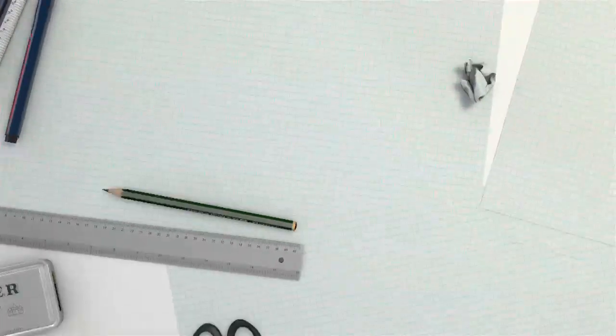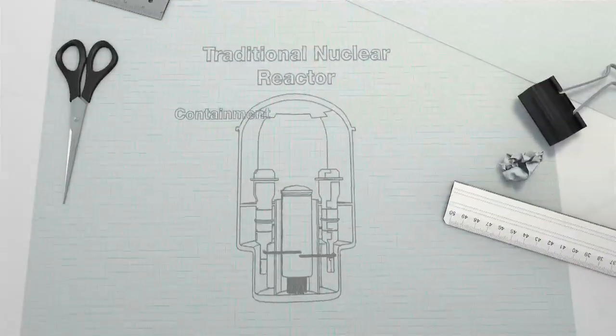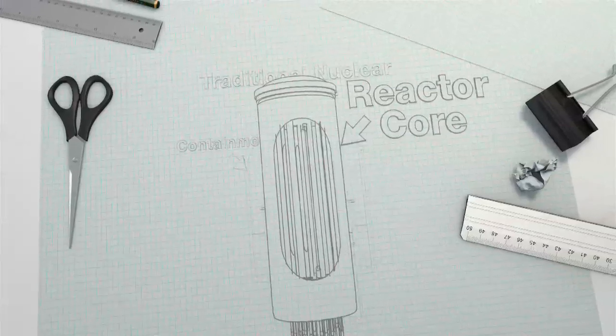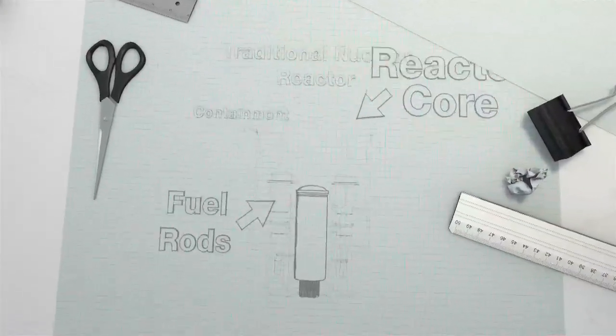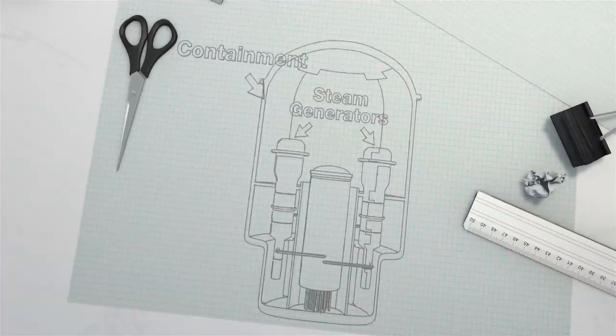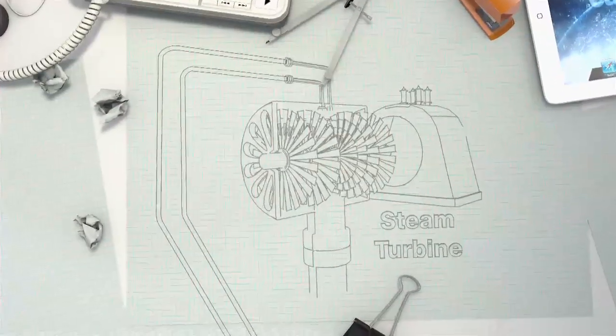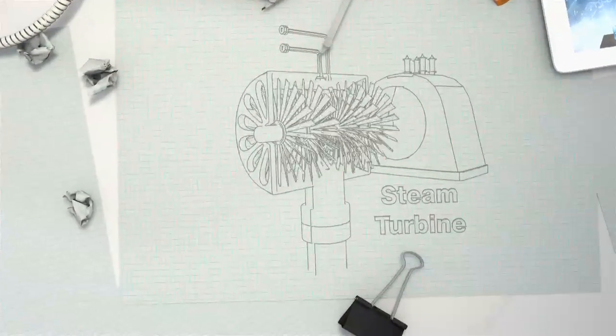A traditional nuclear reactor generates energy by heating water using enriched uranium rods. The uranium's nuclear reactions heat the water into massively pressurized steam, which is then used to turn a turbine, creating electricity.